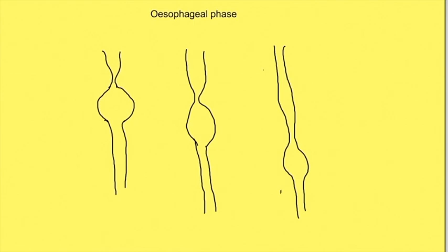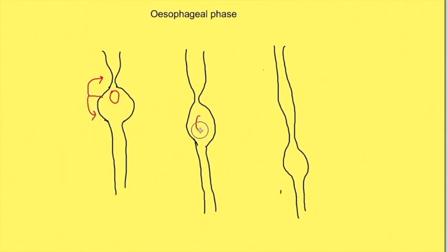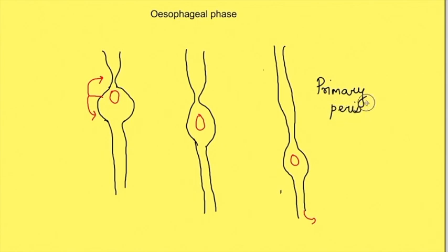When food enters the esophagus, a wave of peristalsis starts due to distension of the esophagus caused by the bolus. Stretch signals from the esophageal wall cause contraction of the esophageal muscles behind the bolus and relaxation ahead of the bolus, creating a wave of contraction and relaxation that keeps moving the bolus through the esophagus. This is known as primary peristalsis, which is preceded by the oral and pharyngeal phases.